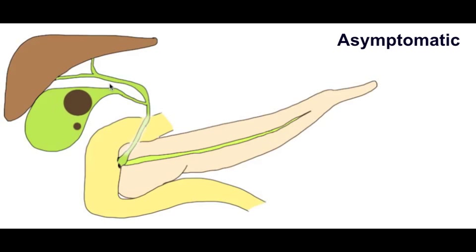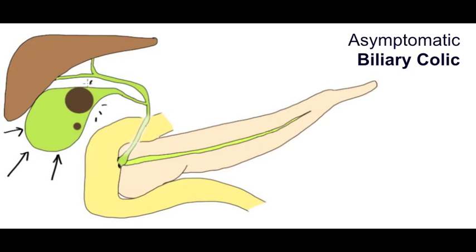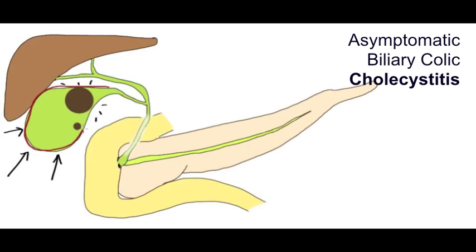On the other hand, this gallstone can get stuck in the neck of the gallbladder, or Hartmann's pouch, with the gallbladder contracting against it. Now that's going to hurt, and that is called biliary colic. Now this can actually result in inflammation of the gallbladder, which is cholecystitis.